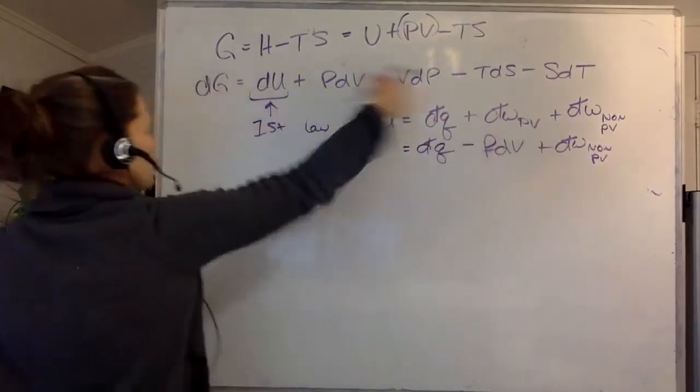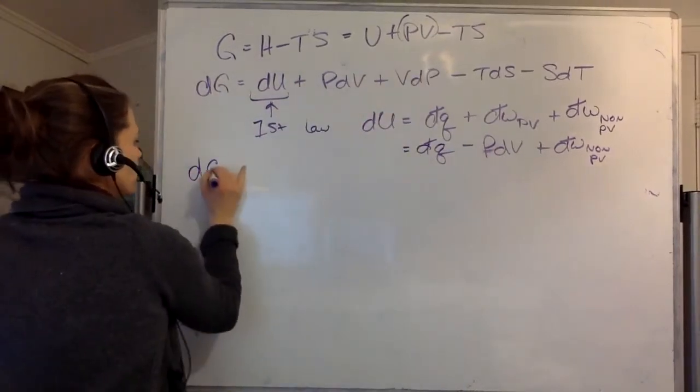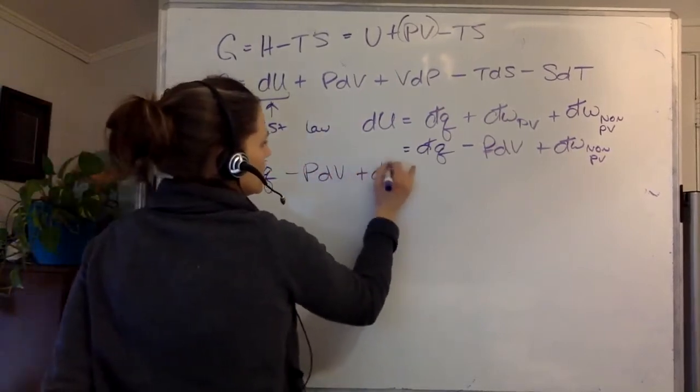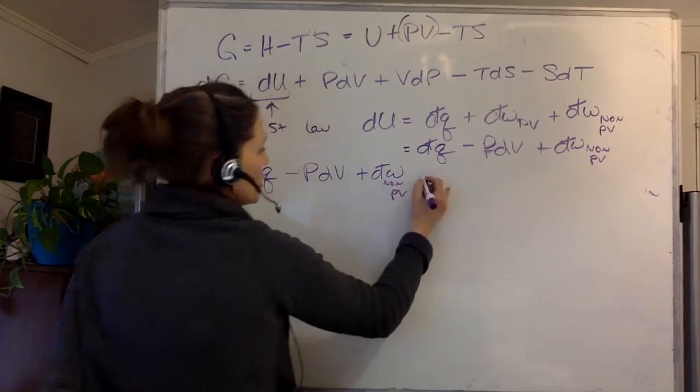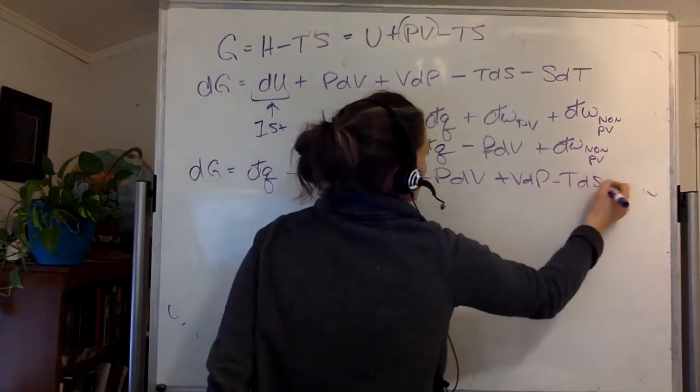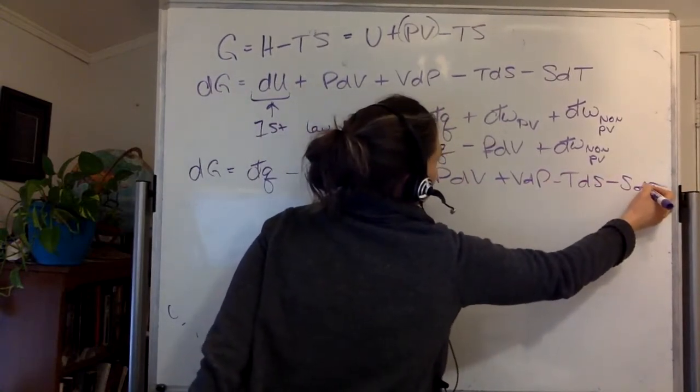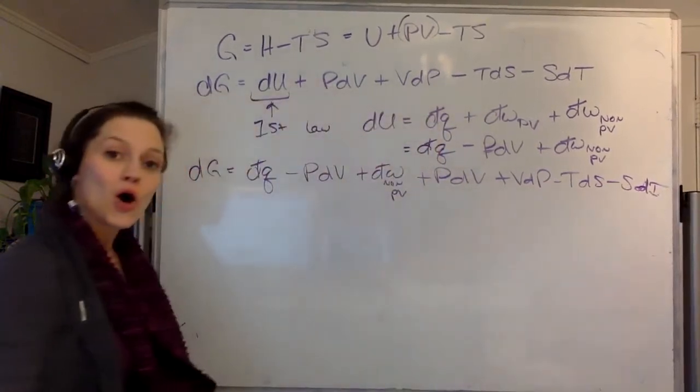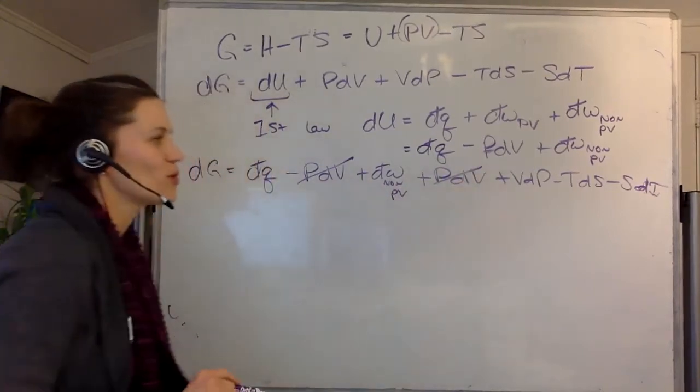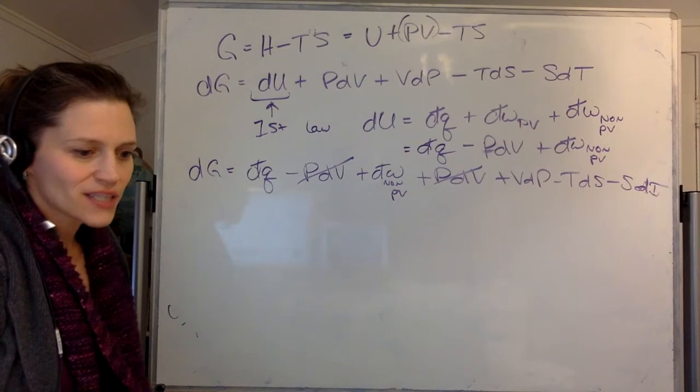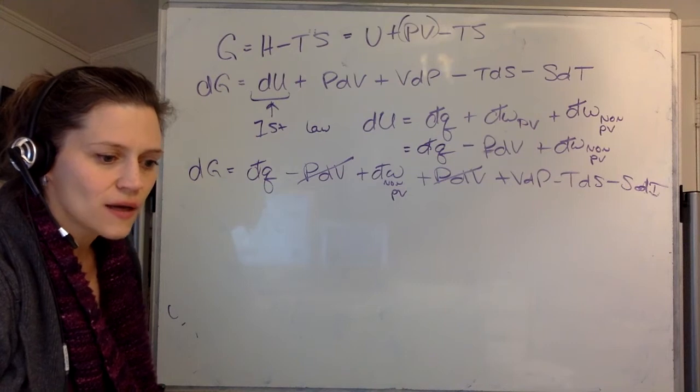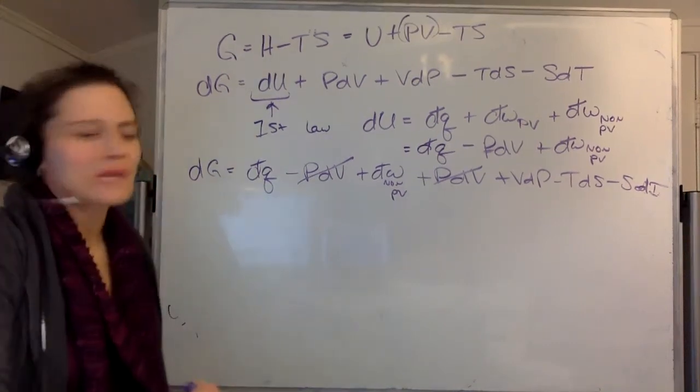So now I'm going to put this into here, and this is going to be dG is equal to dQ minus PdV plus dW non-PV, plus PdV plus VdP minus TdS minus SdT. Hopefully you can already see where I'm going with this. My pressure volume work and my pressure volume work, those are going to cancel out. That's quite glorious. I've also got, what else do I have?